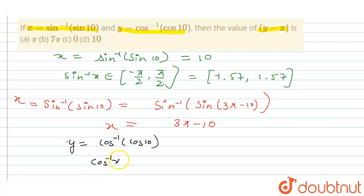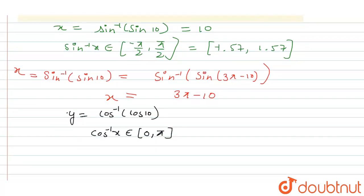Now for y equals cos inverse cos 10, we will also look at the range of cos inverse x. The range of cos inverse x belongs to 0 to pi. From here we can say that if we cancel cos inverse and cos directly, 10 doesn't belong to this range either.